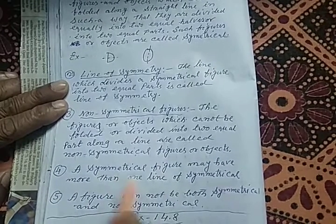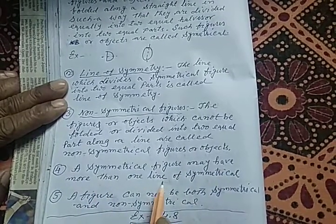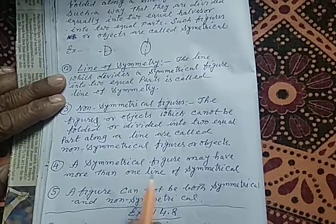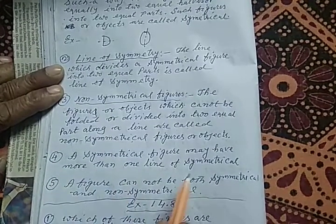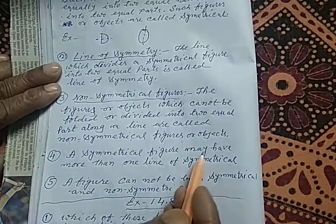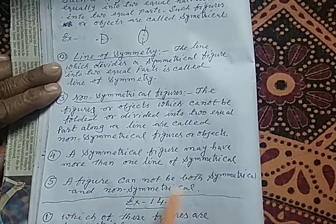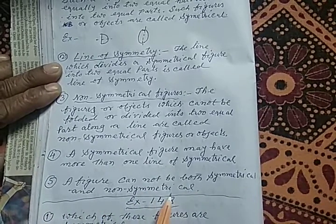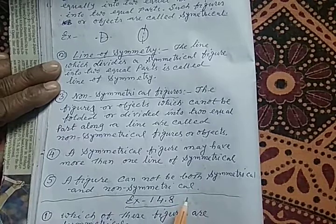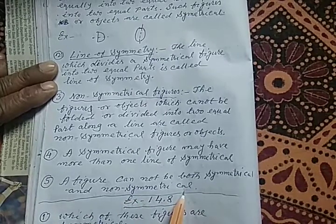The fourth important point: a symmetrical figure may have more than one line of symmetry. The line of symmetry for a symmetrical figure may be one, two, or more — it may be horizontal, vertical, or diagonal. The last important point is that a figure cannot be both symmetrical and non-symmetrical simultaneously.